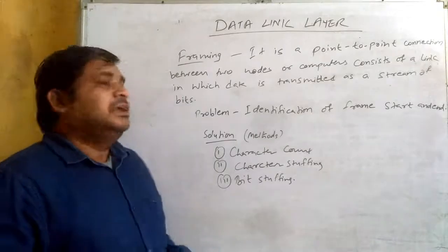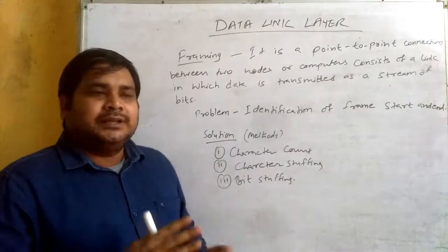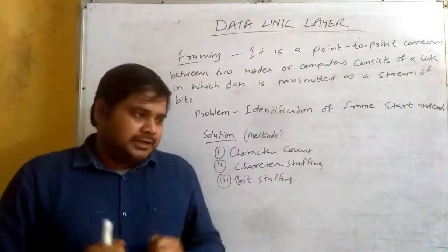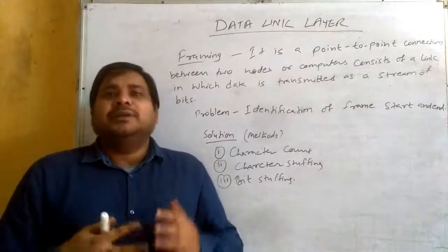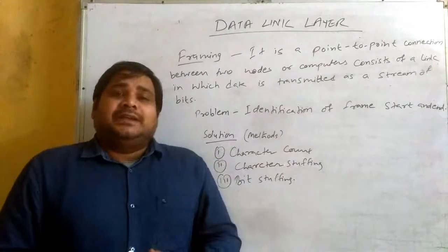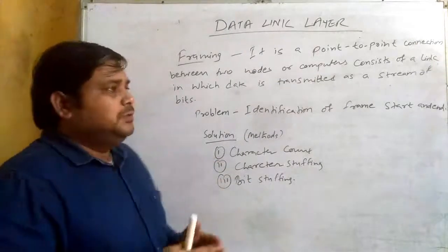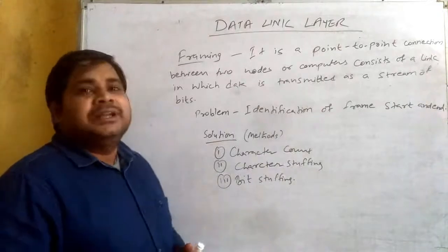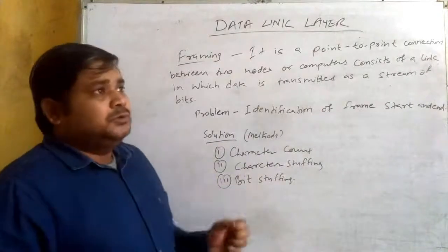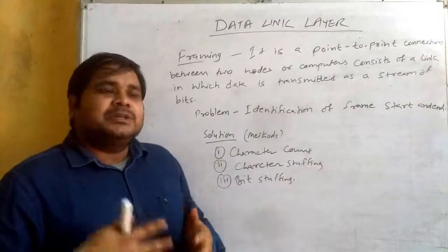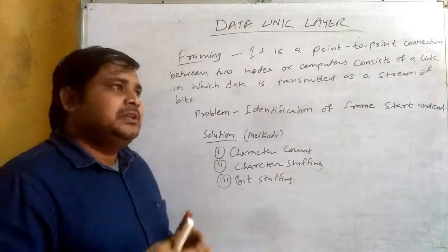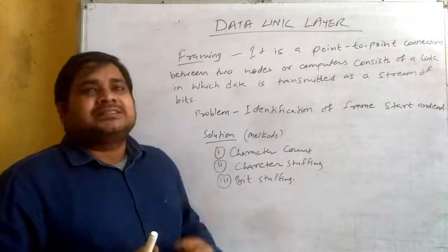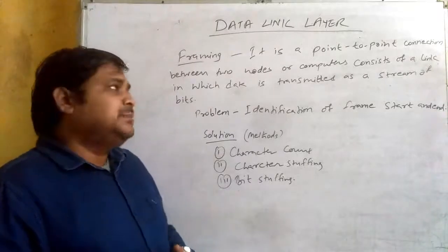Hi Friends! In the last video, we have seen the basics of data link layer. We have classified two sublayers: the logical link control sublayer and the media access control sublayer. When we talk about the logical link control sublayer, the logical link control will be achieved in the LLC sublayer.